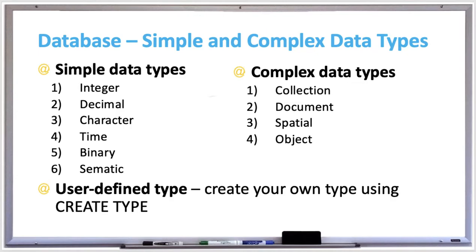There are six main categories of simple data types. There's integer, which are whole numbers, positive or negative. Decimal, which are floating point numbers, or numbers with a decimal or fractional value.